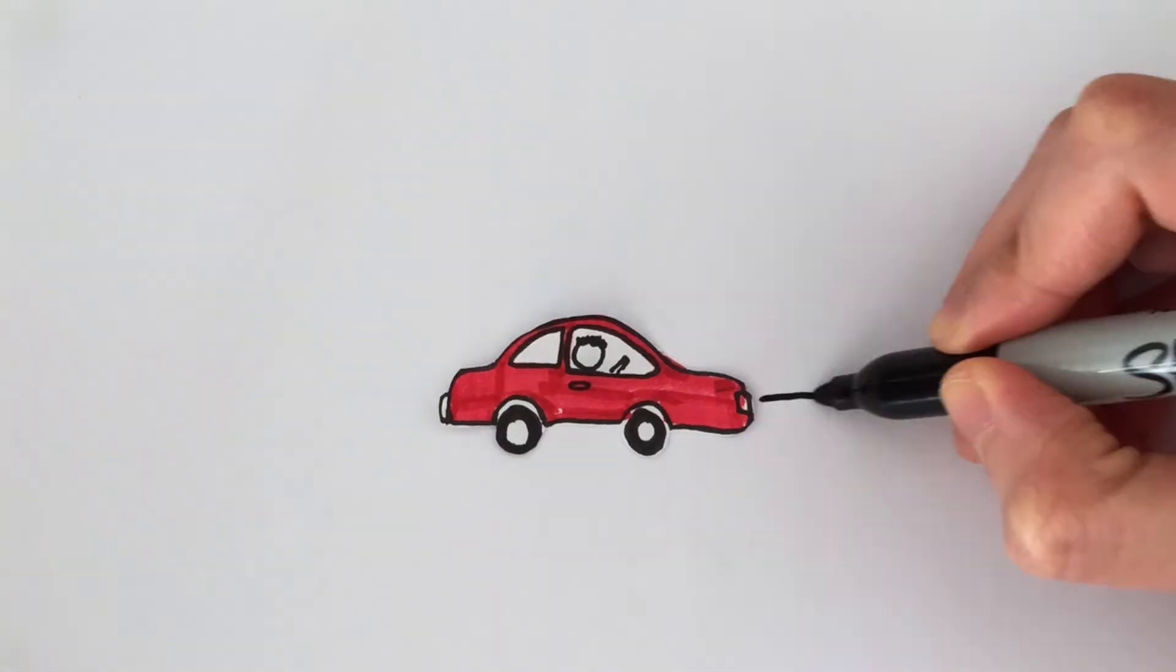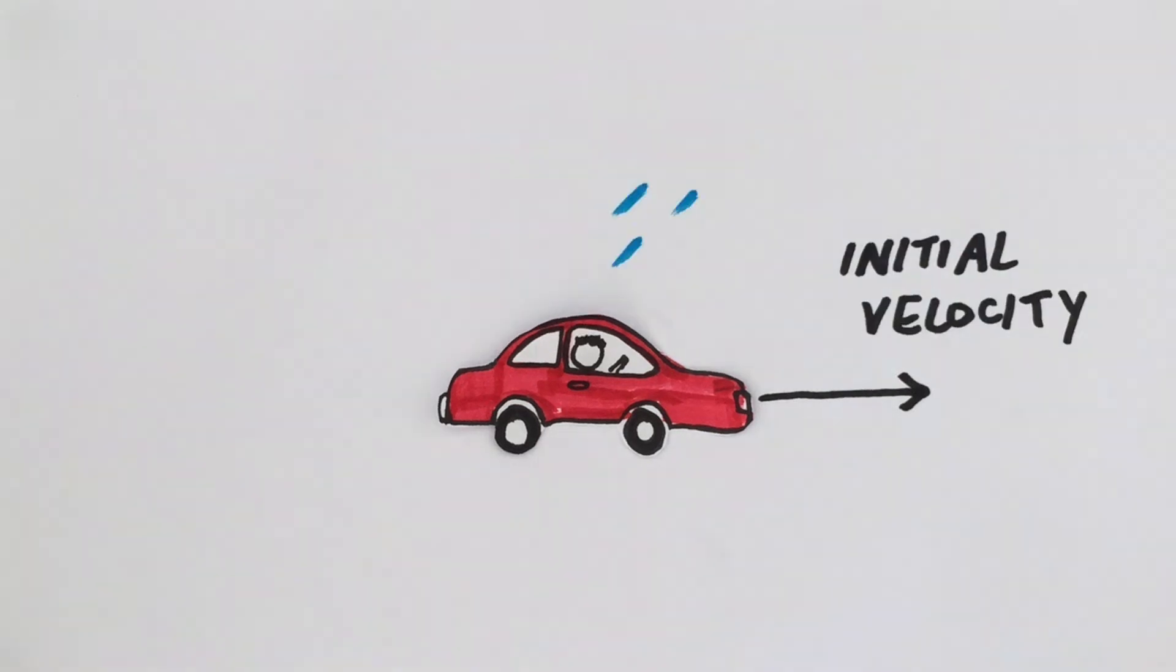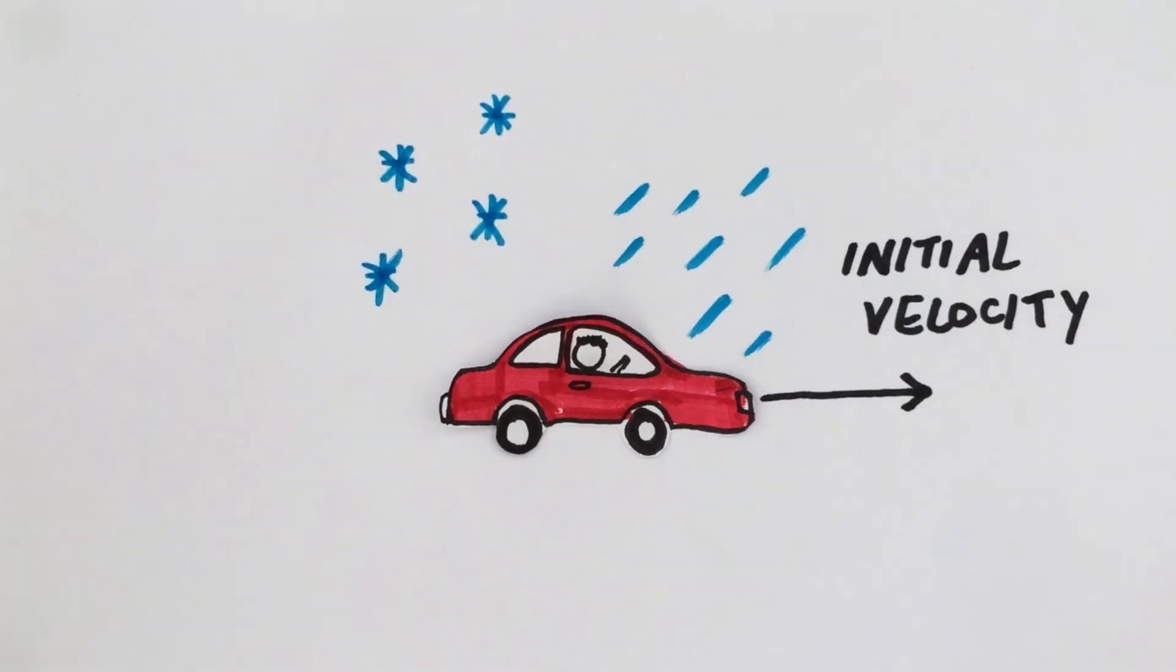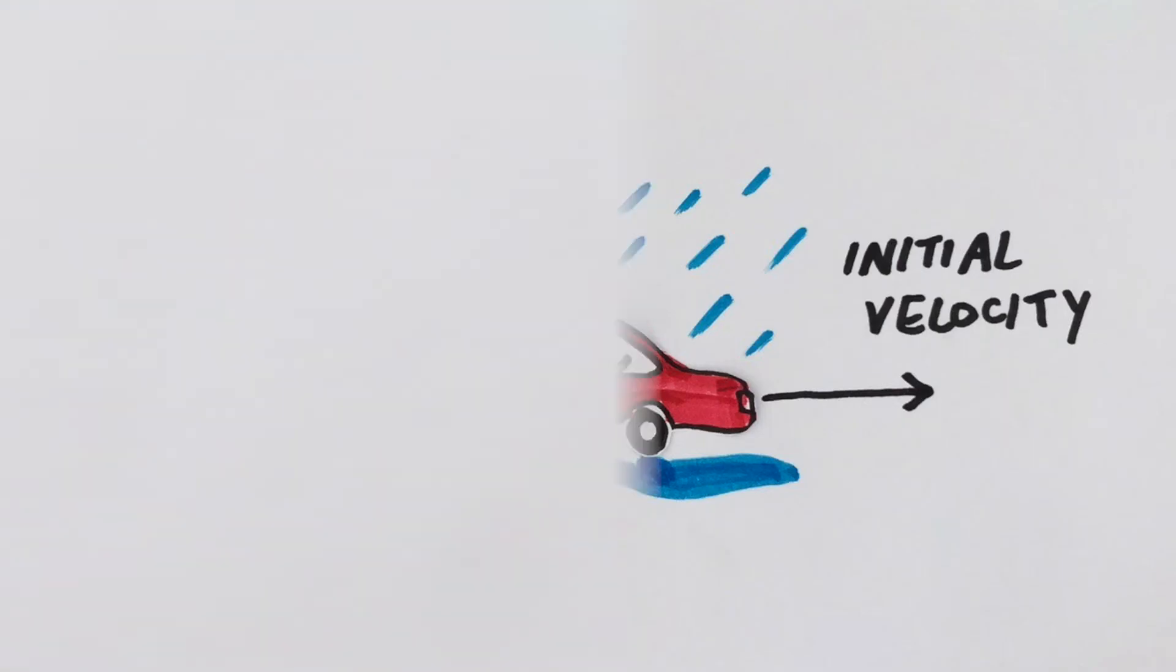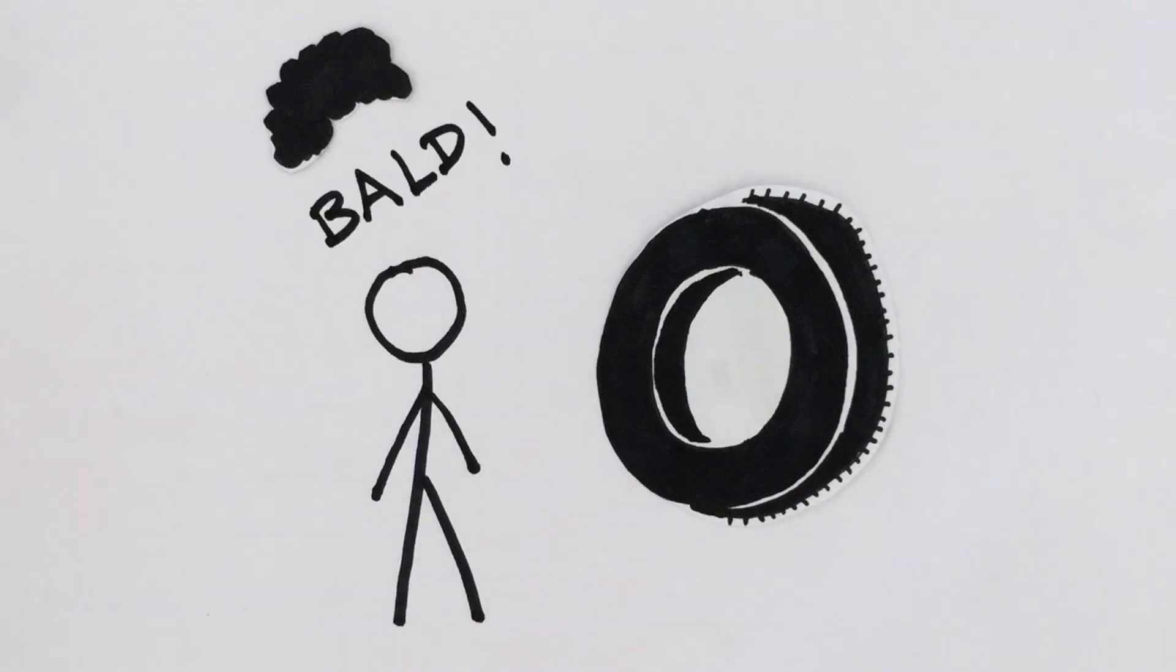The braking distance depends on how fast the car is traveling, and is it raining? Is it snowing? Is there any puddles on the road? What about the conditions of the brakes? How's the grip on the tires?